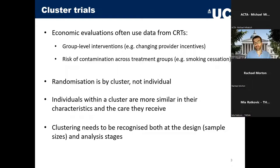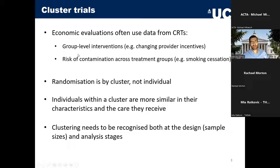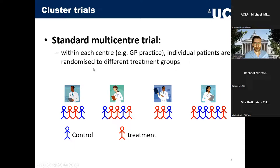Individuals within a certain group are more likely to share their characteristics and therefore their variance — not only characteristics but also contextual features, the care they receive, and other things. That within-cluster dependence breaks one of the classical assumptions of linear regression about independence. Therefore it needs to be recognized not only when doing the analysis at the end, but also at the design stage — for example, when calculating your sample size.